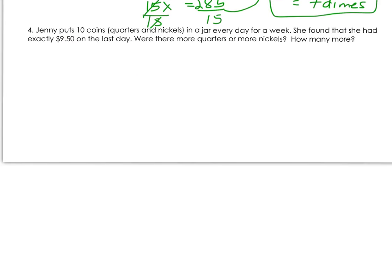This last one kicks it up a notch. Jenny puts 10 coins, quarters and nickels, in a jar every day for a week. She found that she had exactly $9.50 on the last day. Were there more quarters or more nickels, and how many more? First, let's assign our variables. If we have quarters and nickels, and we want to know the amount of each, we'll do x equals number of quarters and y equals number of nickels.